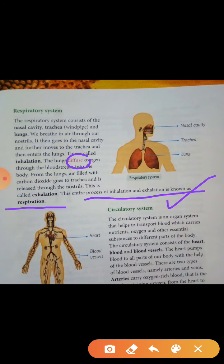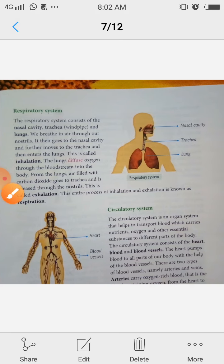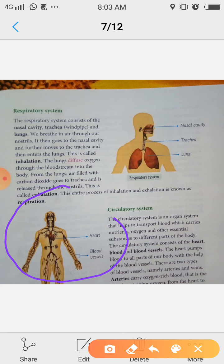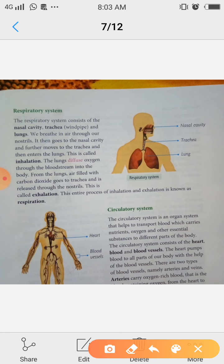The circulatory system — let's look at this. This is our circulatory system. Its main components are the heart, blood, and blood vessels. The circulatory system is an organ system that helps to transport blood, which carries nutrients, oxygen, and other essential substances to different parts of the body.